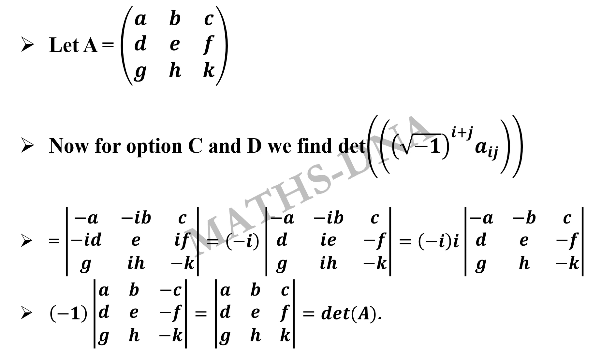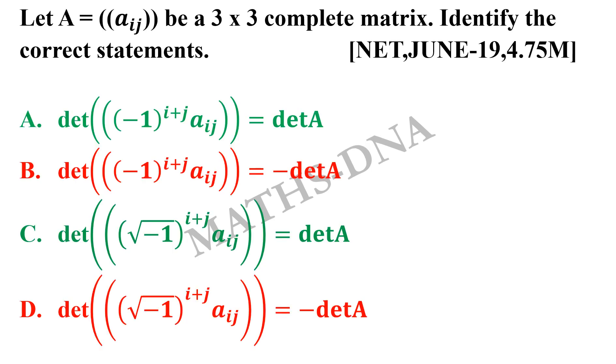I would recommend you to pause the video over here as well and try to solve these steps by yourself and see if you are able to solve them or not. We just need to take the elements common and simplify the determinant. And this gives us that option C will be correct and option D is incorrect. So the correct answers are option A and option C.